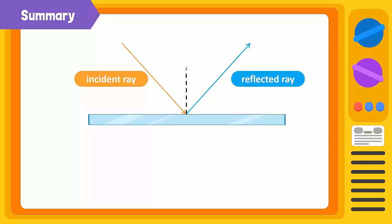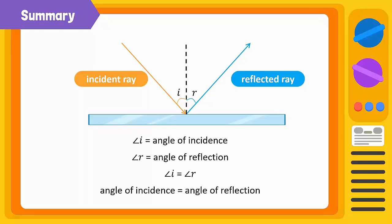The angle that the incident ray creates with the normal is the angle of incidence. The angle between the normal and the reflected ray is the angle of reflection. According to the law of reflection of light, the angle of incidence is equal to the angle of reflection.